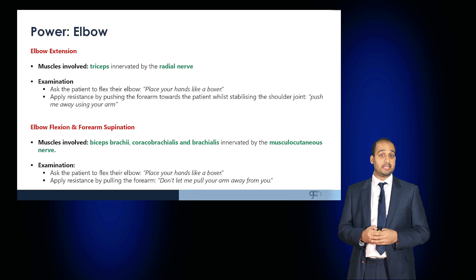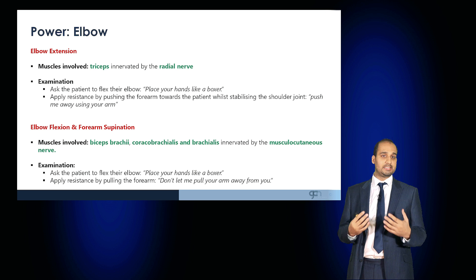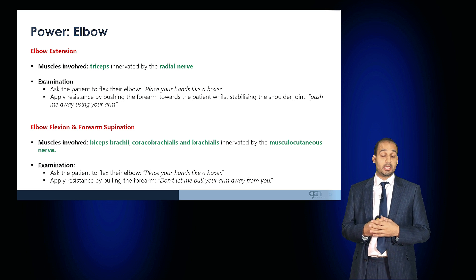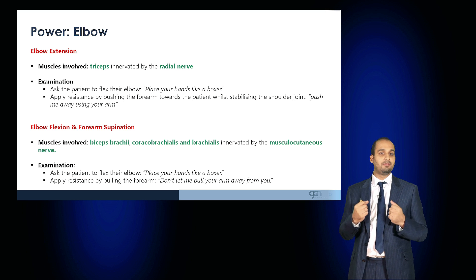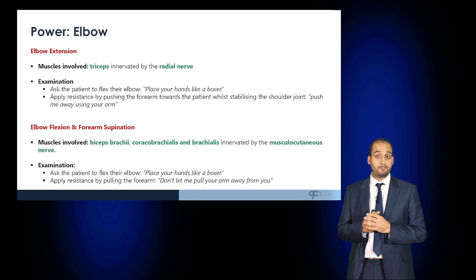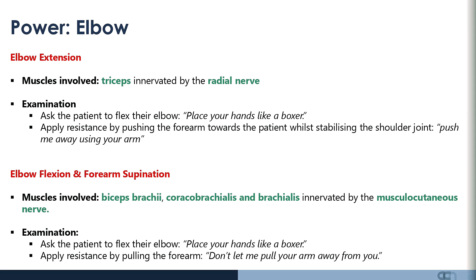Now examine the power in the elbow by examining elbow extension, done through the triceps muscle which is innervated by the radial nerve. Ask the patient to flex their elbow, place their hands like a boxer, and apply resistance as they push their arm forwards to open up their elbows. Elbow flexion and forearm supination are coordinated through the biceps brachii, coracobrachialis, and brachialis muscles, innervated by the musculocutaneous nerve. Ask the patient to keep their elbows flexed, apply resistance by pulling the forearm, and ask them to resist.